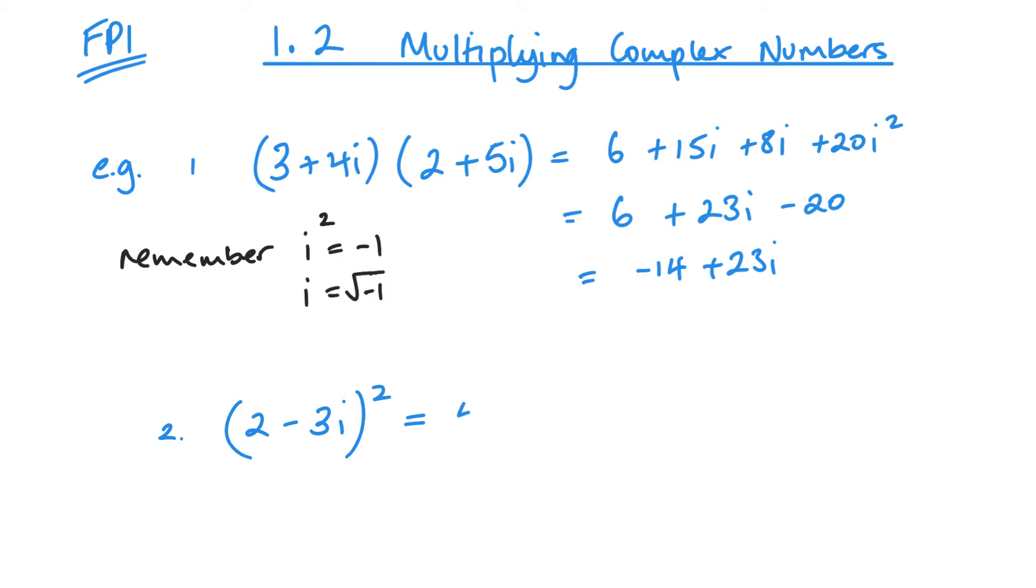So 2 times 2, so we've got 4, minus 6, minus 12i, minus 3 times minus 3, plus 9i squared. So we've got 4, minus 12i, minus 9, so we've got 5, minus 5, minus 12i as our complex number there.